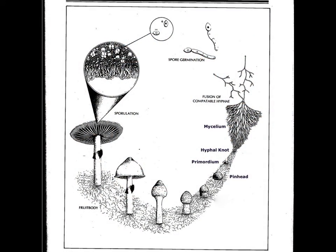This is a diagram of the basidiomycete life cycle. In the top center are spores, which germinate into hyphae, and the hyphae will fuse together and form a large network called mycelium. This mycelium is actually the vegetative body of this organism, and its role is to absorb enough nutrients to allow it to produce a mushroom.